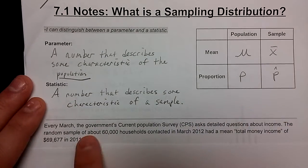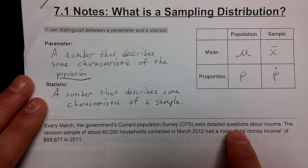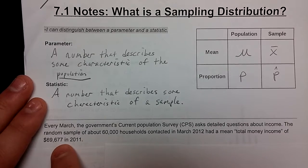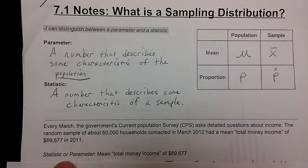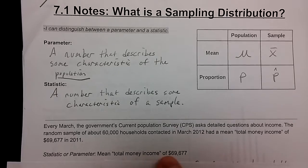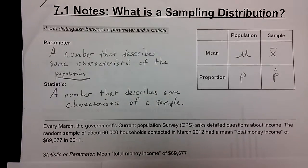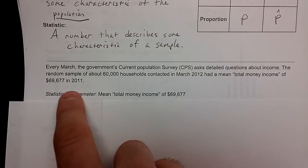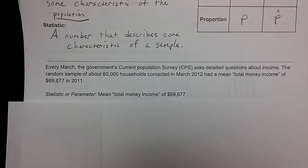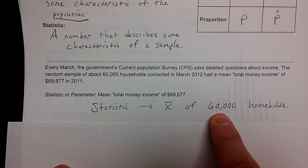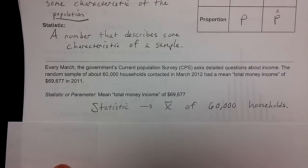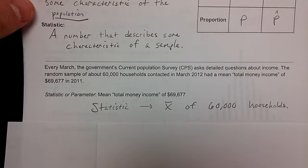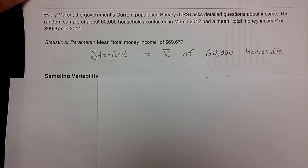So this example, every March, the government's Current Population Survey asked detailed questions about income. The random sample of about 60,000 households contacted in March 2012 had a mean total money income of $69,677 in 2011. Is this a statistic or a parameter? For you to answer this, you need to decide, is the 69,677 describing the small sample or the entire population? Well, the mean comes from the sample of 60,000 households. That makes it a statistic. You're talking about 60,000 households, not all the households, the entire nation. So this is your sample. Therefore, this number is a statistic. It is a mean, so we use x bar.